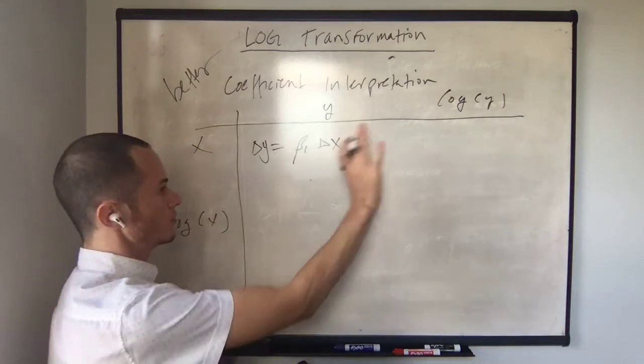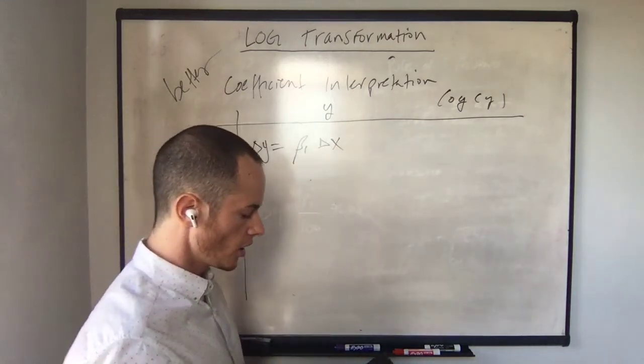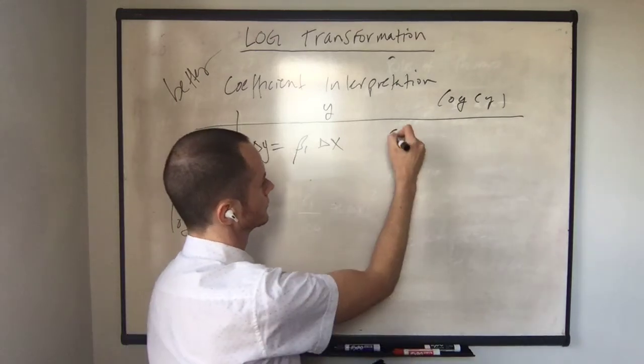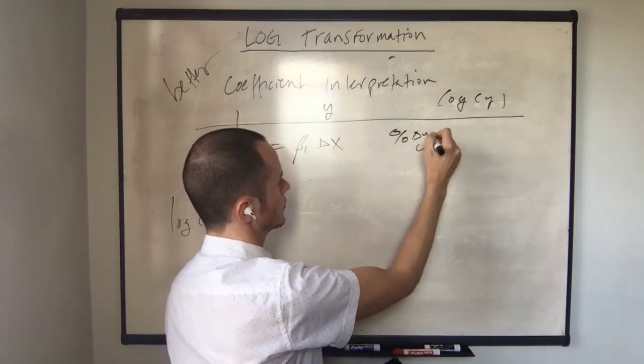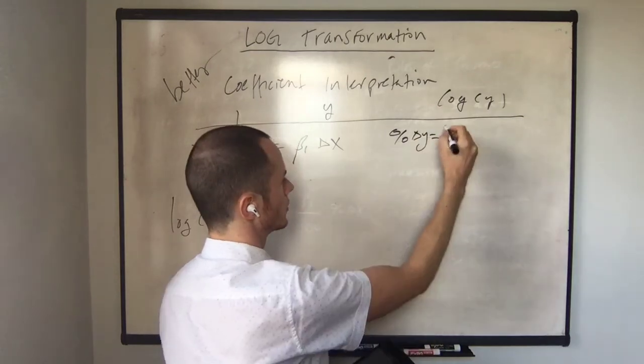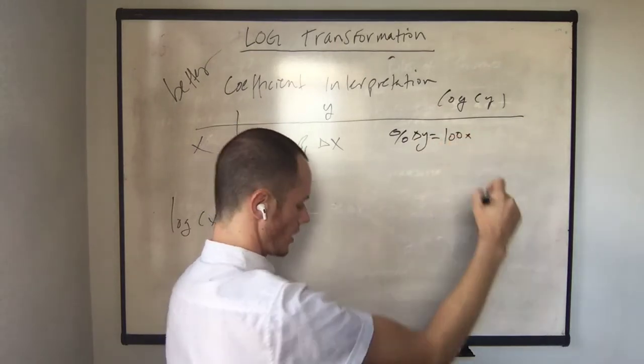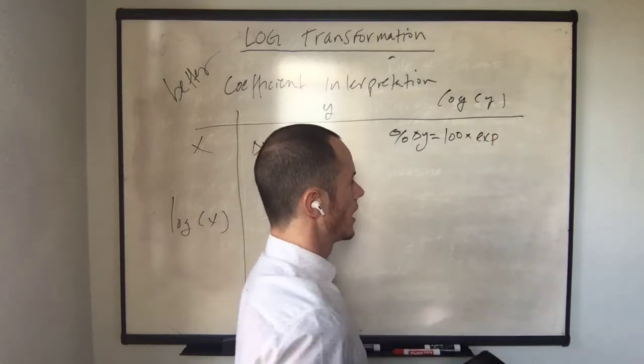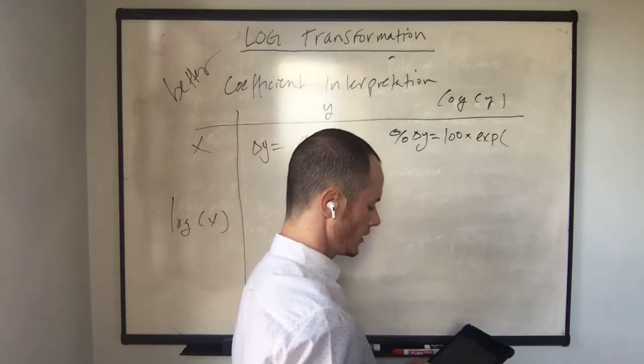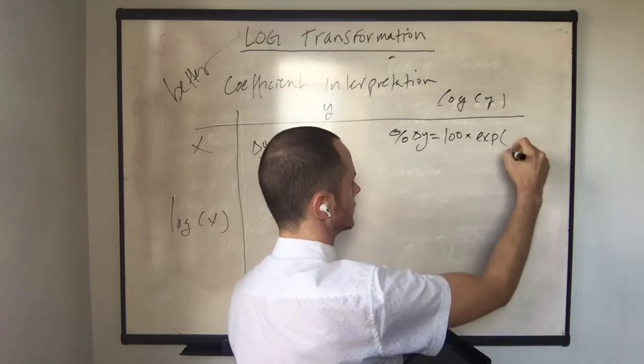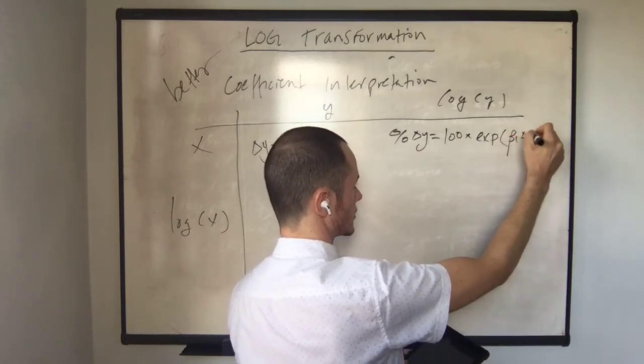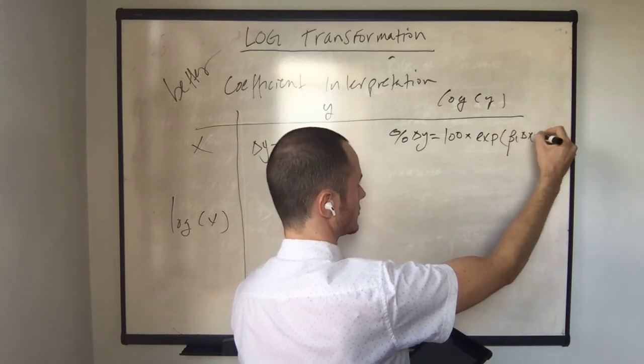For x in its original form and log of y, so y is log transformed, percent change in y is equal to 100 times e to the power of beta 1 times the change in x minus 1.